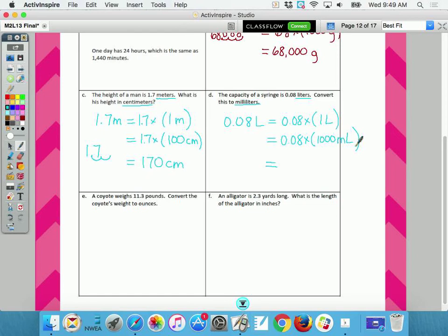Eight hundredths times a thousand. So one, two, three. Add one zero. My answer is 80 milliliters. How are you doing? Just two more and then an exit ticket. I think you can handle it.